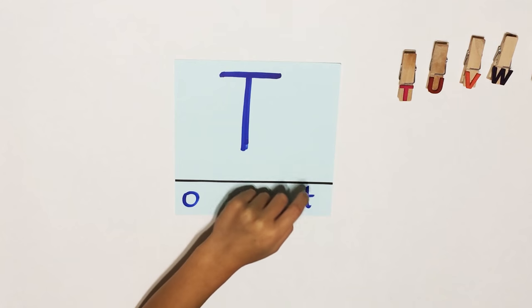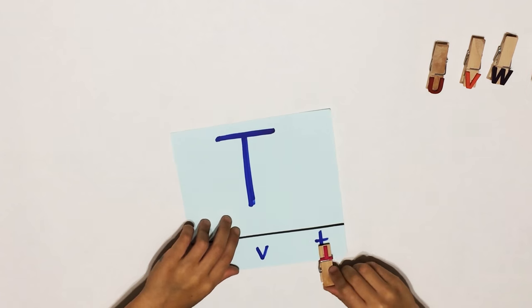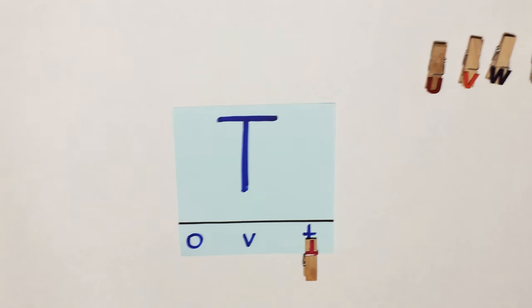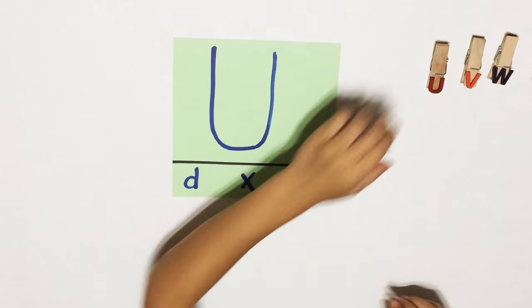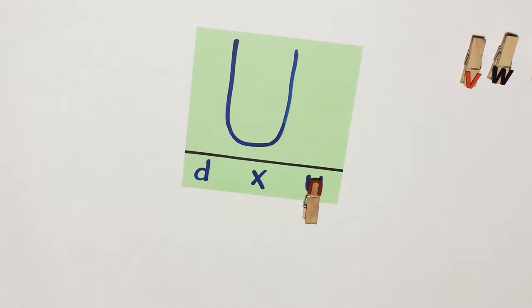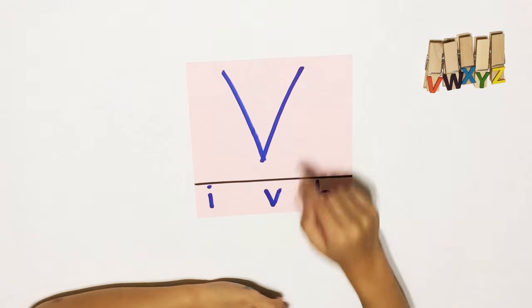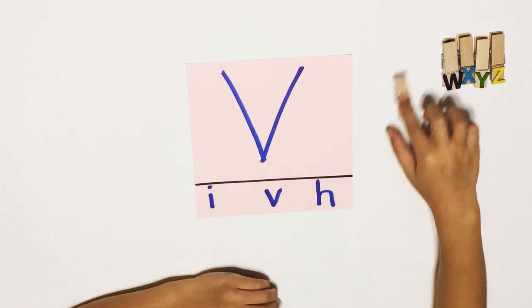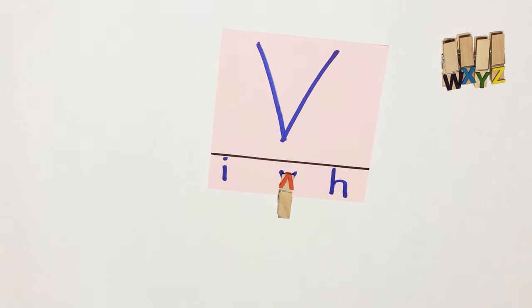T, lowercase T. T for towel. U, lowercase U. U for umbrella. V, lowercase V. V for volcano.